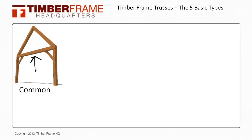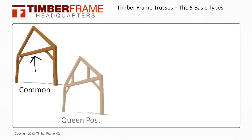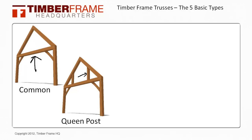The next design is a queen post truss. It is similar to the common truss in that it utilizes the bottom tie beam, but it also adds two posts dividing the gabled space. These are known as the queen posts. This works well for highlighting the windows in a great room, and adds strength and character as well.